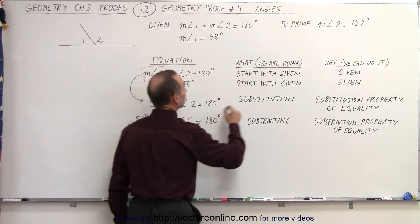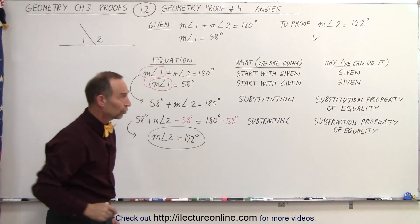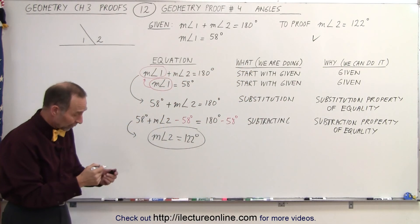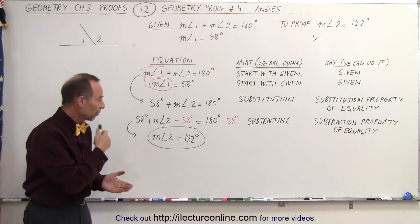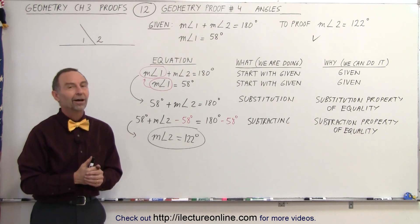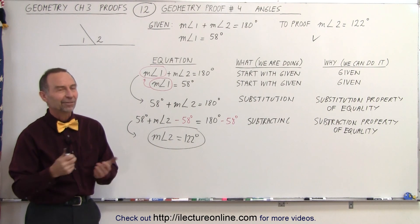Which is exactly what we tried to prove. And so by using the two properties of equality, substitution and subtraction, we're able to show indeed that the measure of angle 2 is 122 degrees. And that's how it's done.